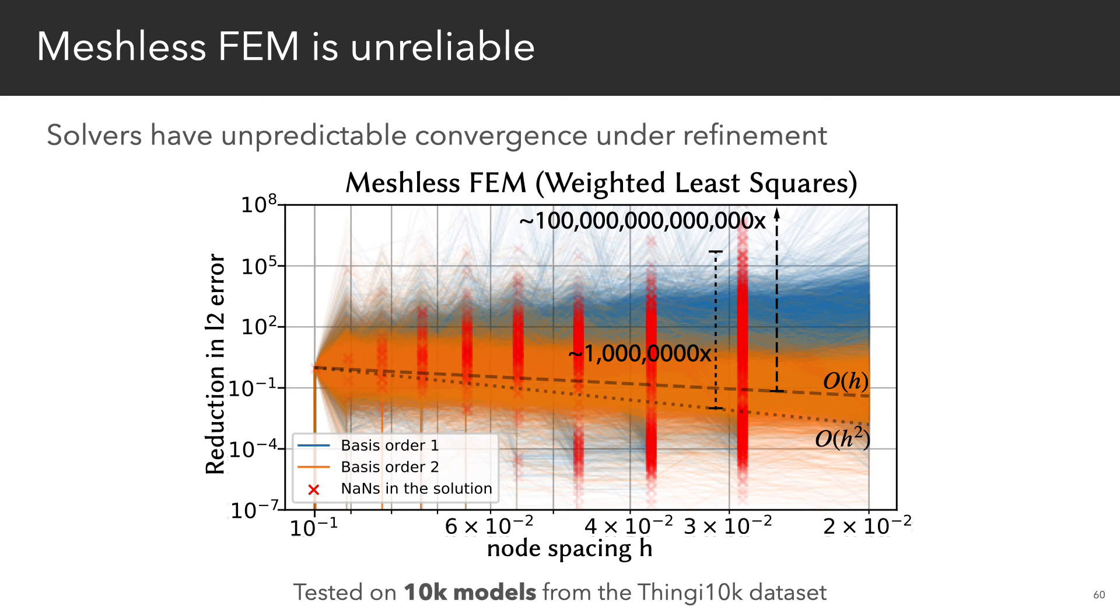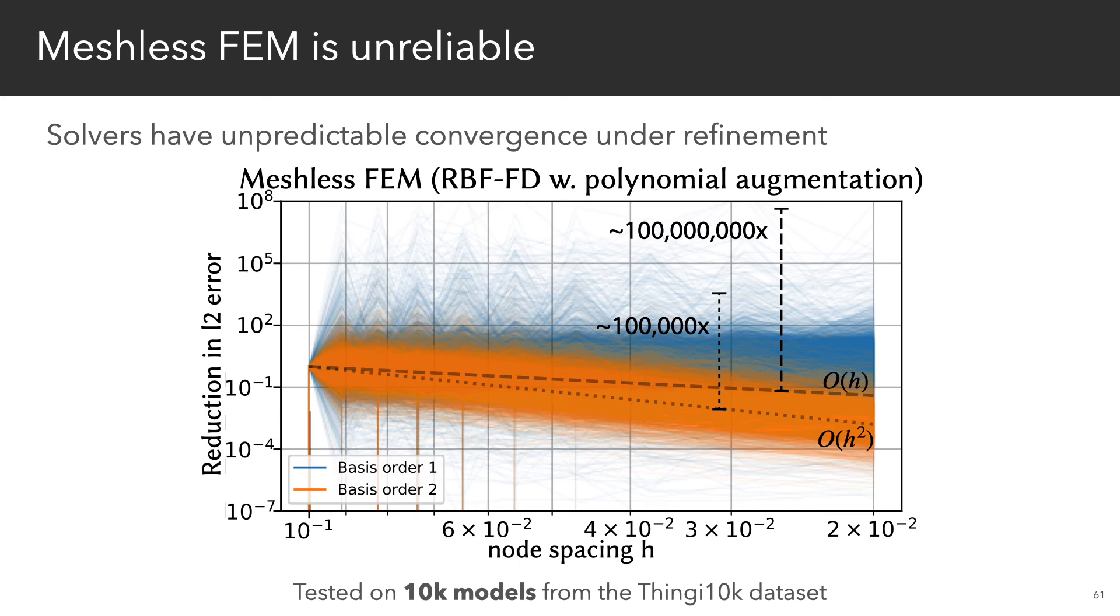The bigger problem with meshless methods is that they're unreliable. Here we solve a standard PDE on all models in the thingy-10k dataset and plot the error under refinement. As indicated by the crosses in the plot, common meshless schemes often fail to converge under refinement, while even state-of-the-art approaches often show extremely large variations in error.